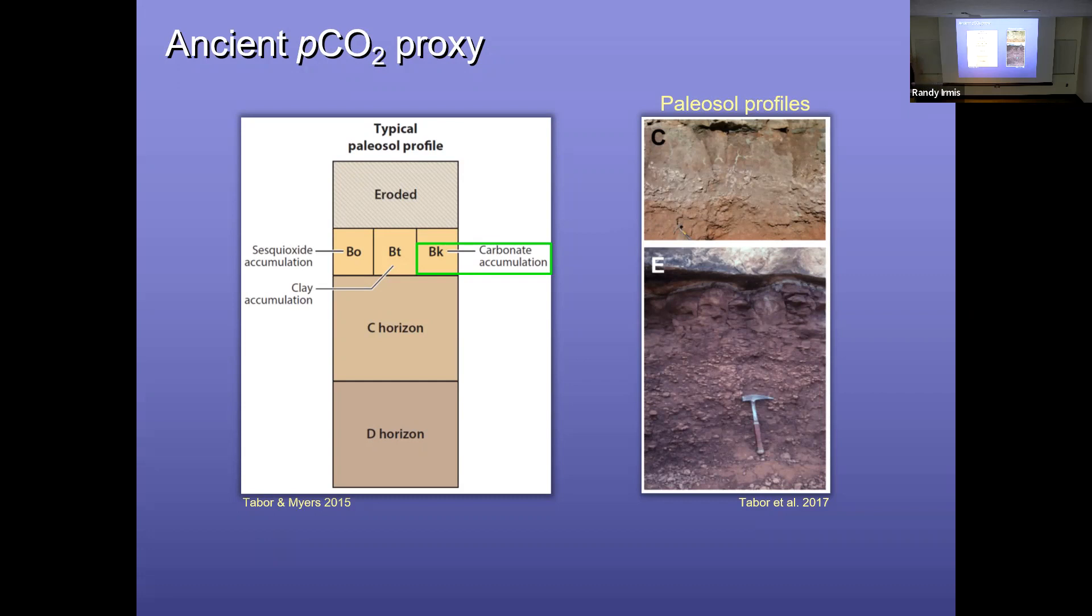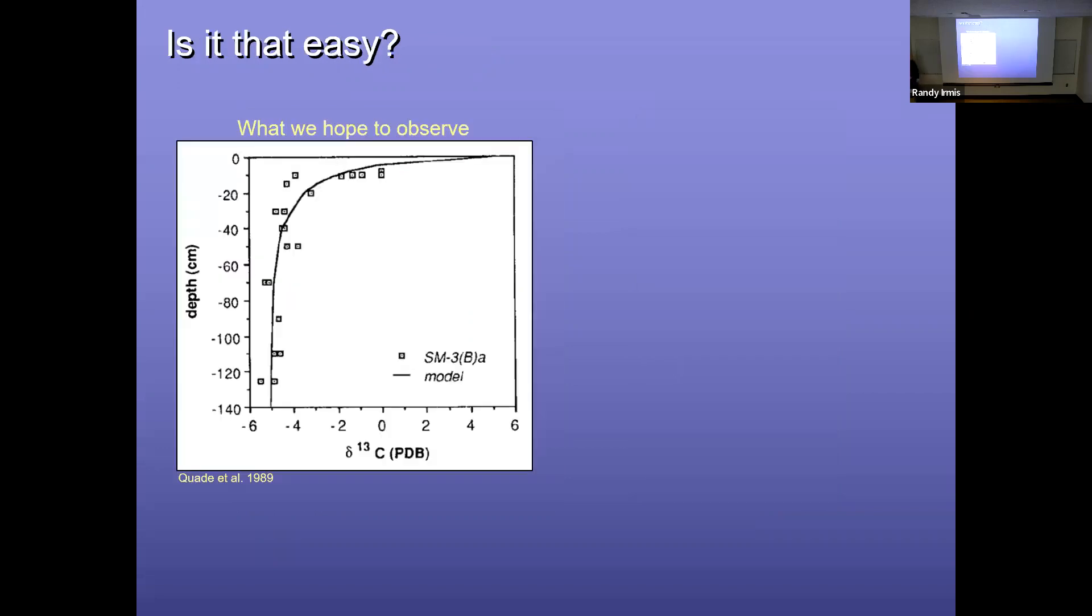So Thure and others have been very careful about how they apply this proxy into paleosols, but not everybody has. And so a lot of studies you read applying this proxy, they just measure down from the top of the soil and then, you know, pluck out a carbonate nodule or two and say, okay, we're deep enough. We've got a couple of carbonate nodules. We'll measure those and calculate PCO2 from that. So is it that easy? Well, I'm not so sure. So this is what we hope to observe, right? Is that if we just measure down deep enough here, we will sample carbonates that are at equilibrium and, you know, the A horizon may or may not be preserved here.